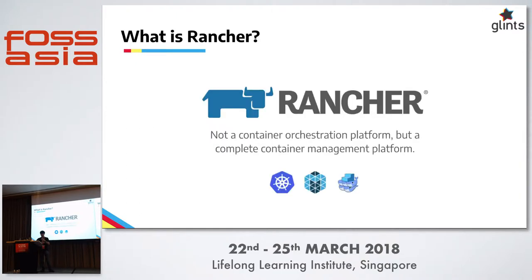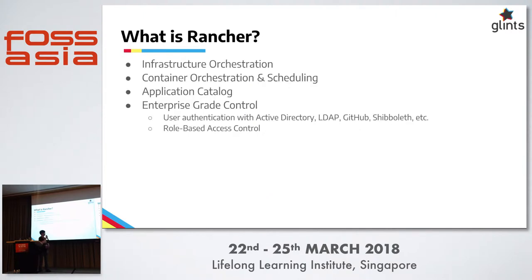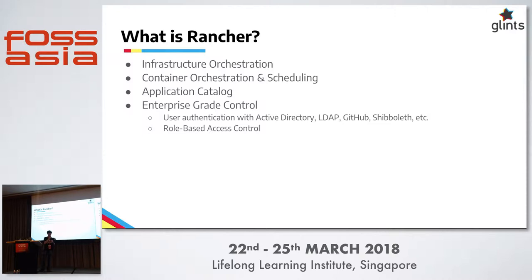What that means is that you can swap out components within Rancher — it's divided into multiple layers. Rancher is a platform that allows you to mix and match and pick which container orchestration layer you want to use. It also provides additional functionality on top of that, including provisioning new hosts on major public cloud providers, an application catalog with ready-to-deploy apps, and access control and management right out of the box — including Active Directory, LDAP, and Shibboleth.